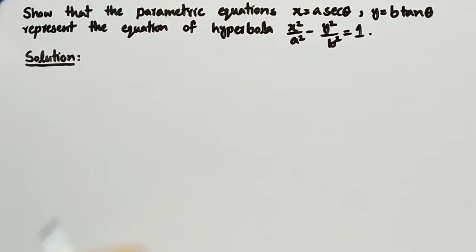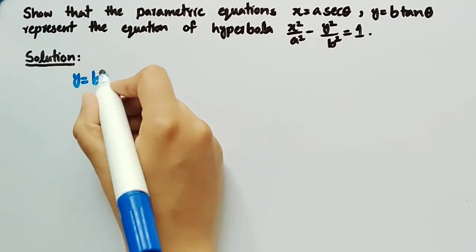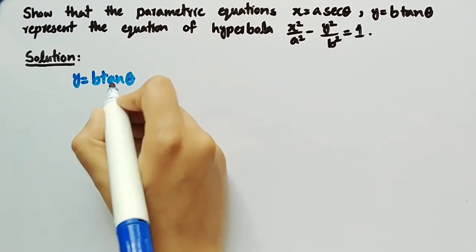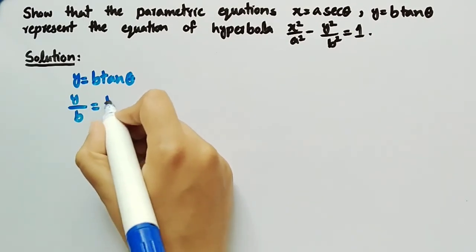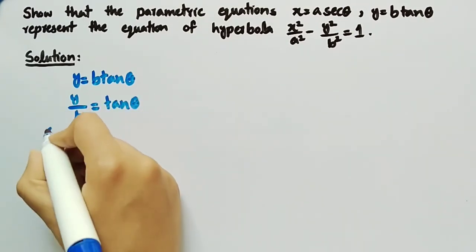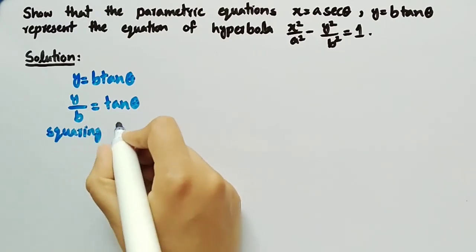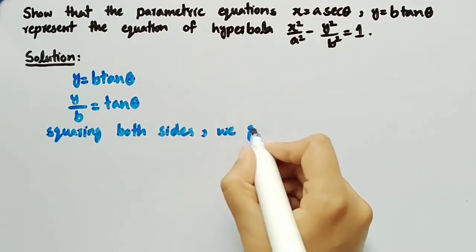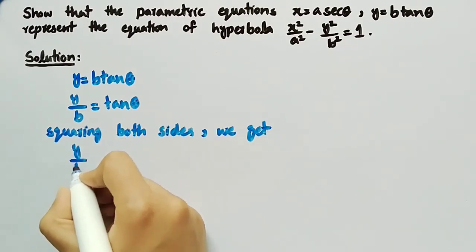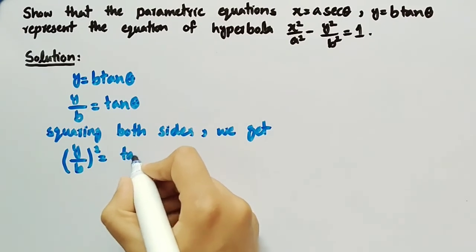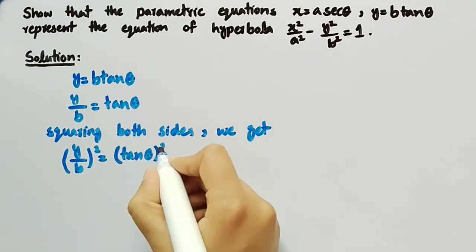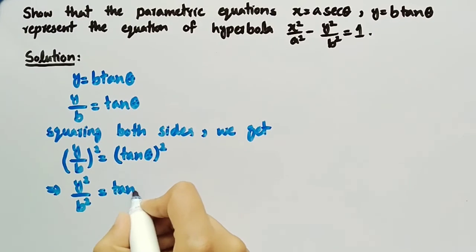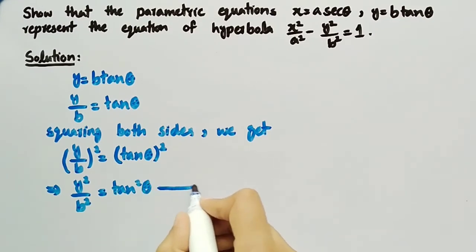It is also given that y = b·tan(θ). By dividing both sides by b, we get y/b = tan(θ). Squaring both sides gives y/b whole squared = tan²(θ), which can be written as y²/b² = tan²(θ). Let this be equation number 2.